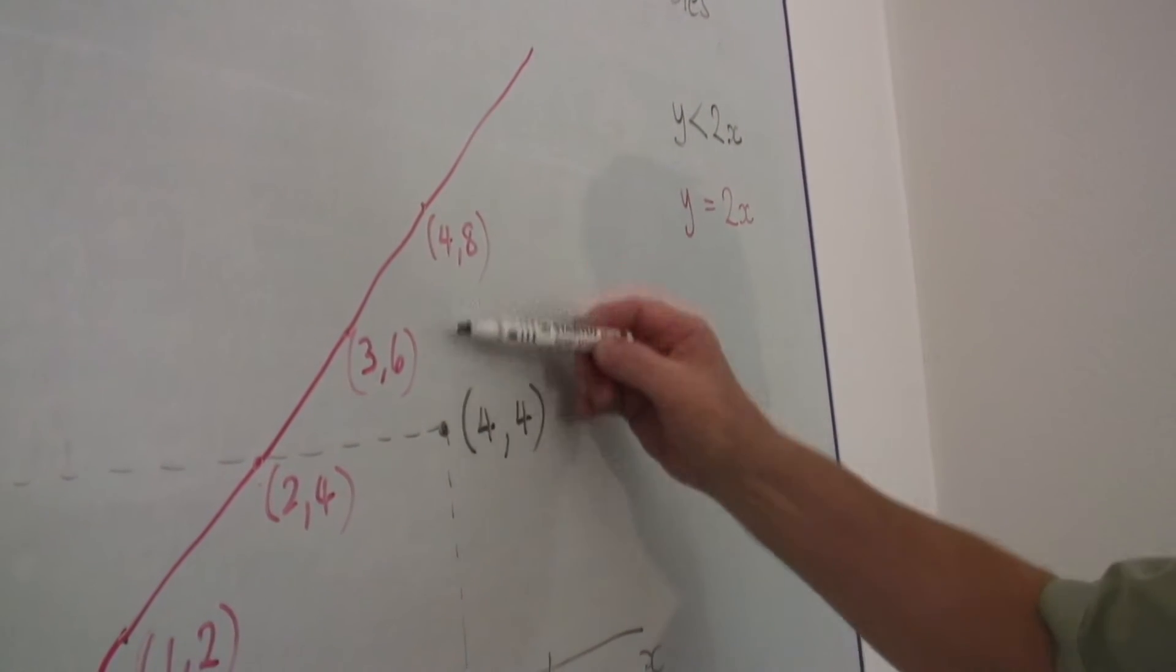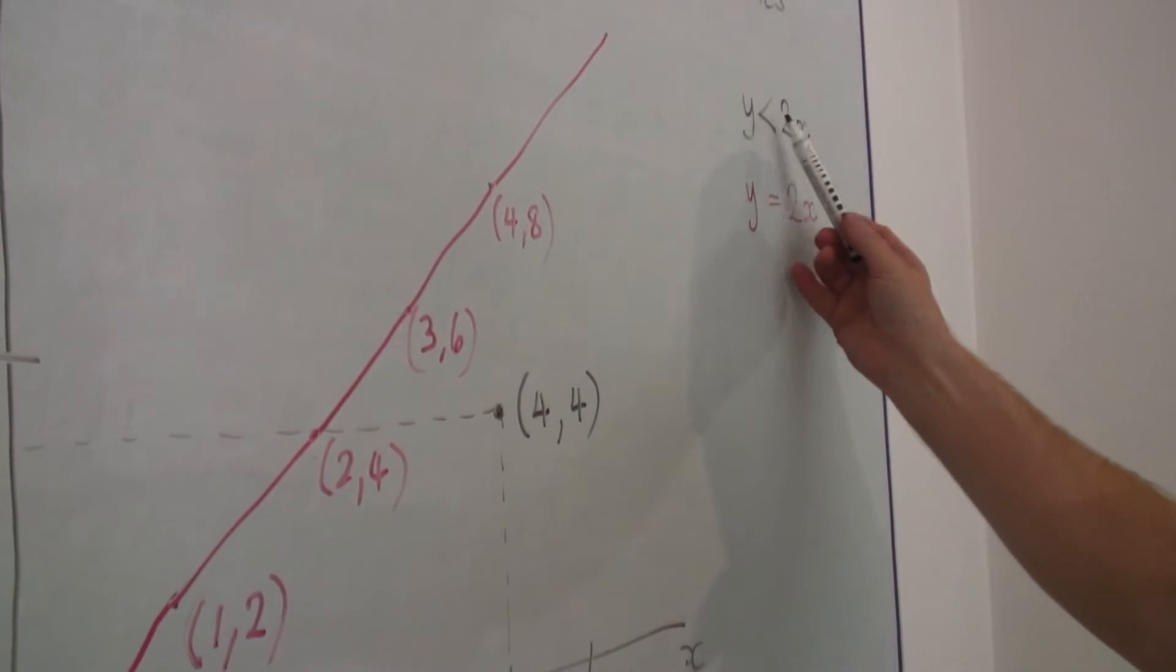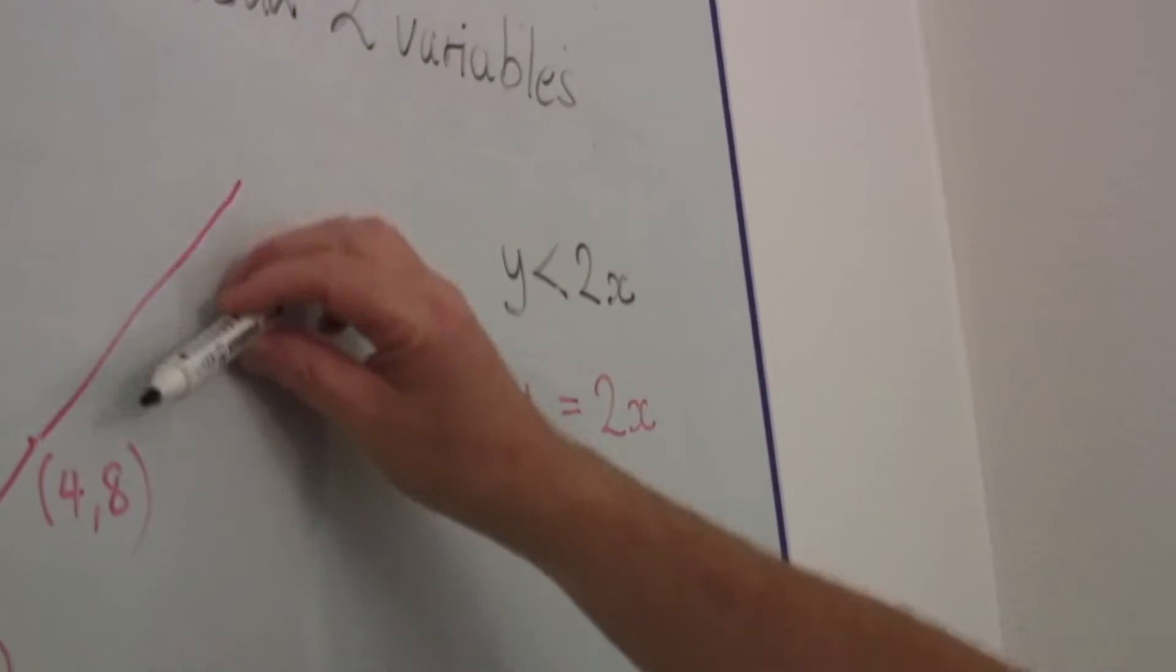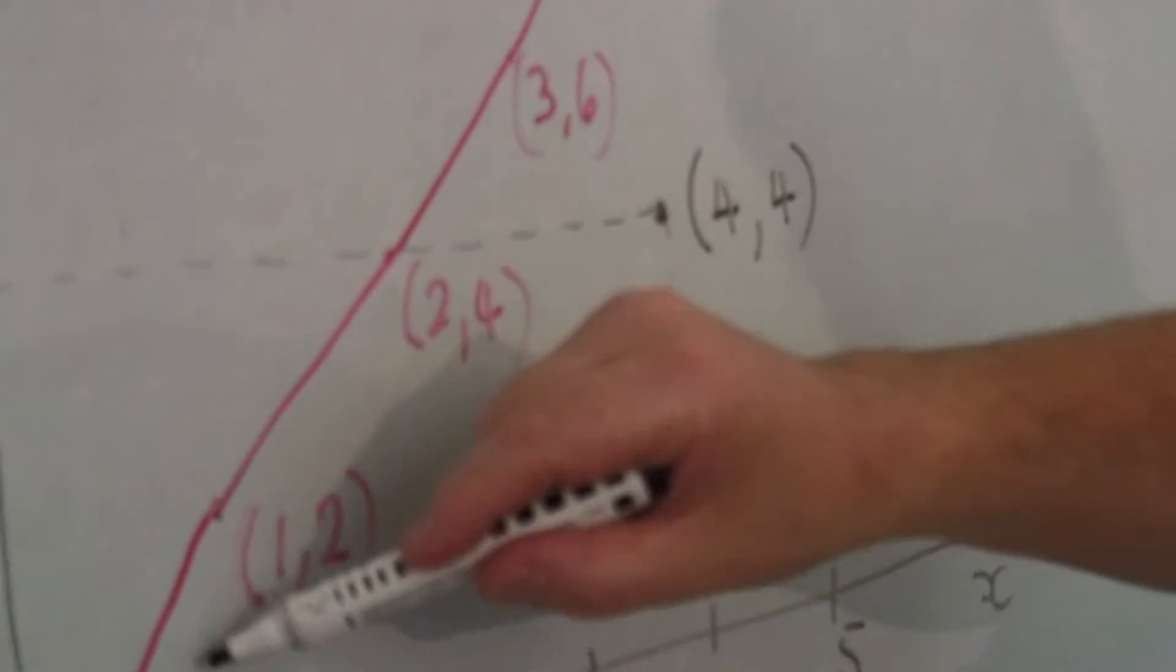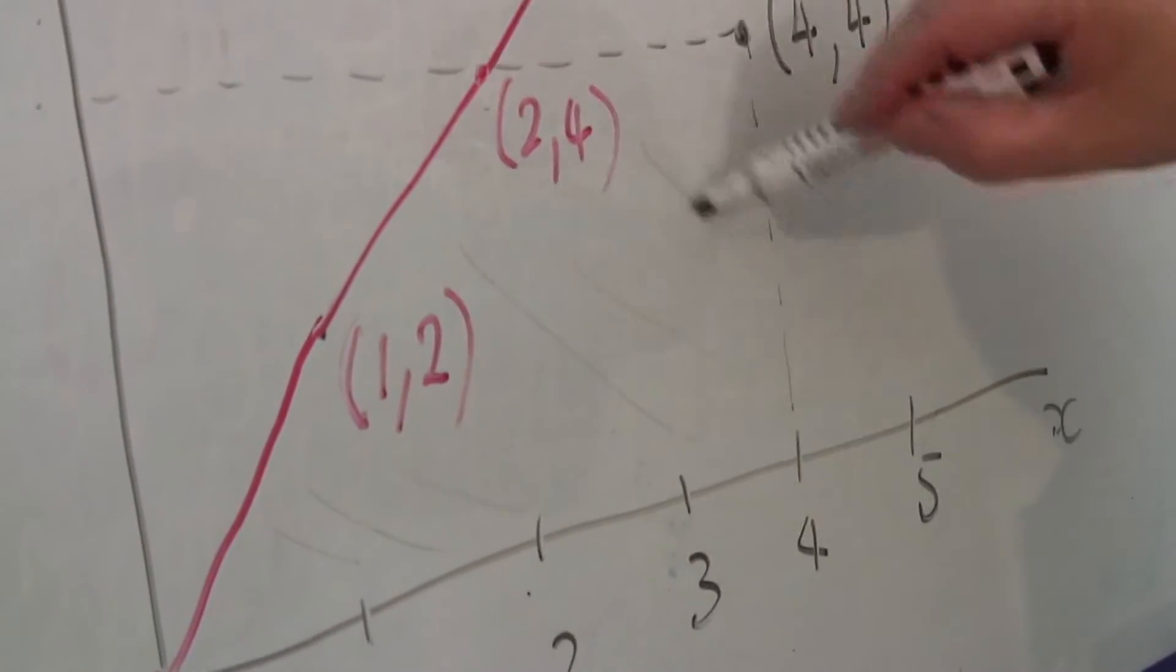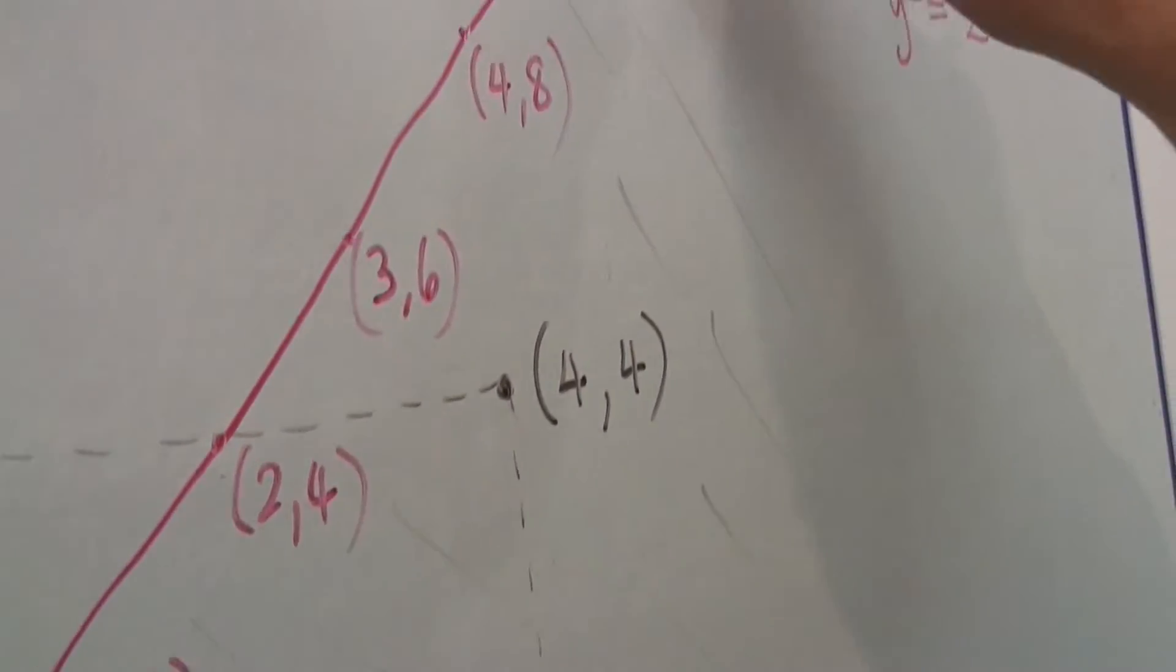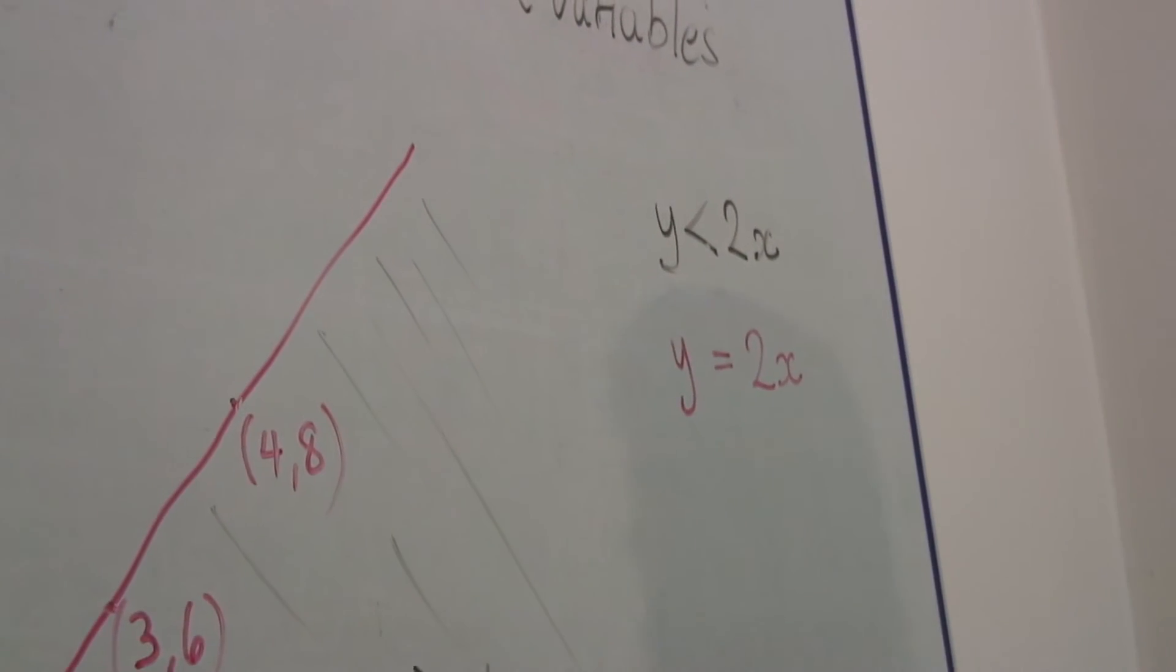four, four is less than y equals two x. So this inequality, the less than, means anything below this line. Anything in this whole area, which I'll partly shade, this whole area is all y is less than two x. Let's just check that.